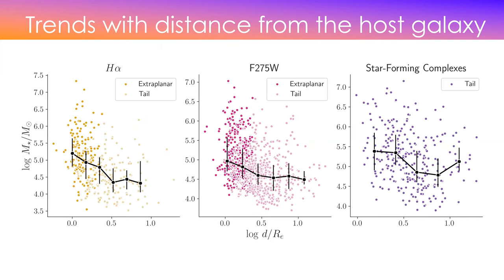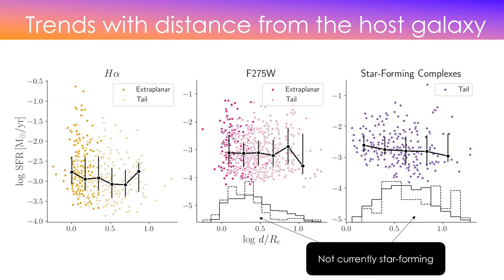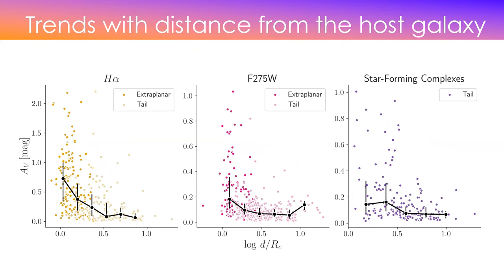Similarly, there is a trend with stellar mass, which can be understood as a consequence of the age trend: things further from the galaxy are less massive because they are younger and had less time to form stars. If you look at star formation rate, there isn't much change with distance. The frequency of objects that are currently star-forming versus not star-forming shows little difference in position — star formation rate is quite sustained over the whole range.